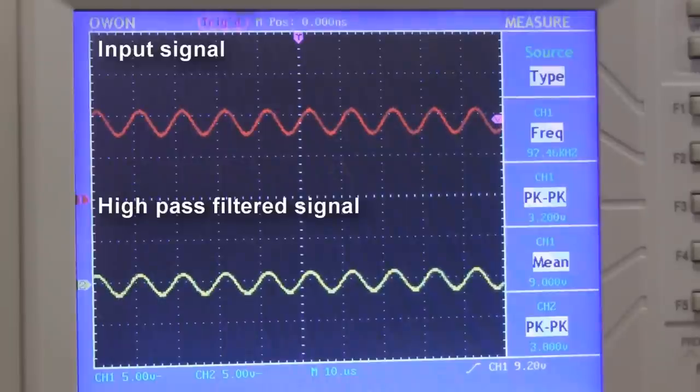Finally, I want to show you this example where I have a 3-volt sinusoid laid on top of a 9-volt DC offset on the input. The high-pass filter completely removes the DC offset, and you're left with a 3-volt sinusoid.